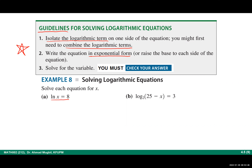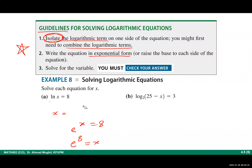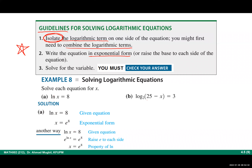To solve ln x equals 8: is the logarithmic term isolated? Yes. Now write it in exponential form. When you have log base e of x equals 8, this is equivalent to e to the power 8 equals x. Alternatively, raise e to both sides: e cancels with ln, and you get x equals e to the power 8. Both approaches give the same result.